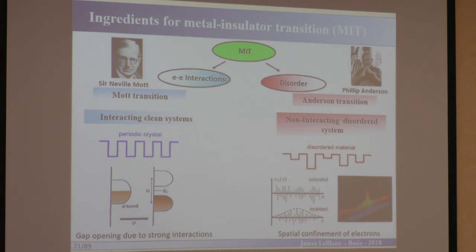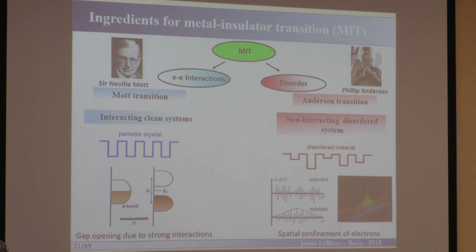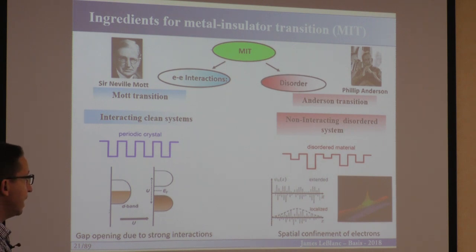I'm going to talk about metal-insulator transitions. There are a couple of ways to get them. The first is through electron-electron interactions — you may have heard of a Mott transition. The basic idea is that in a periodic crystal with a large enough interaction, you can actually break your density of states into two bands: a lower Hubbard band and an upper Hubbard band. Lichtenstein talked about these; he could see them in his DFT calculations. Another option is through disorder, via something like an Anderson transition, which occurs in non-interacting disordered systems and can actually form localization — spatial confinement of electrons — resulting in an insulating-type phase.